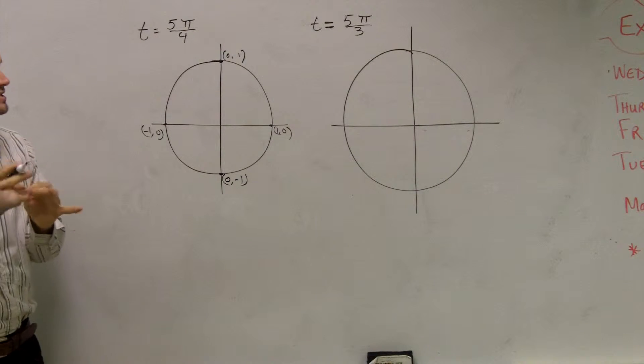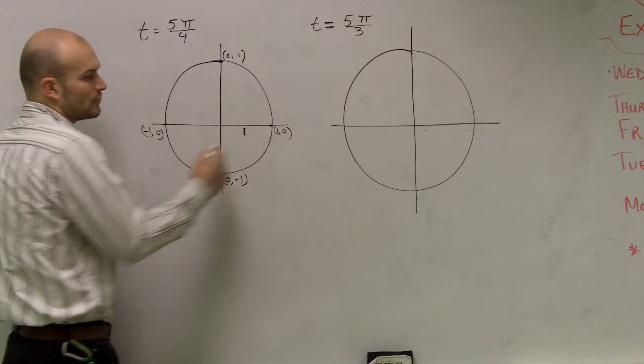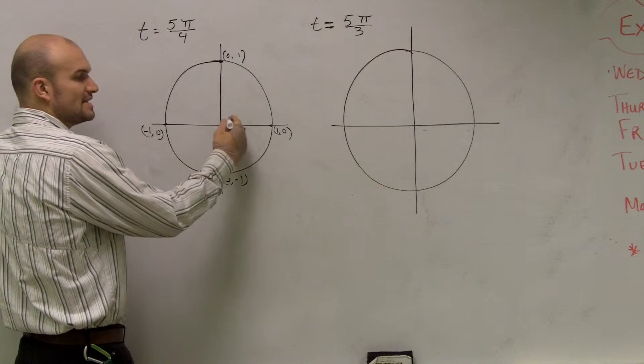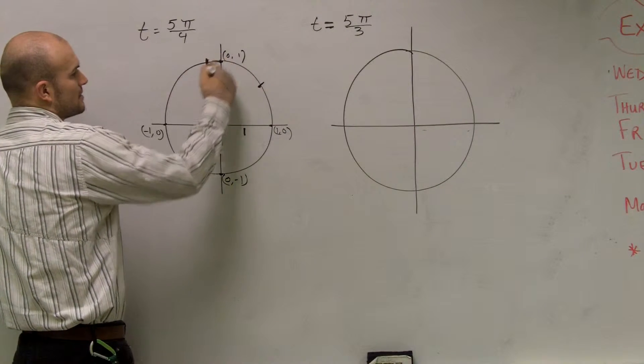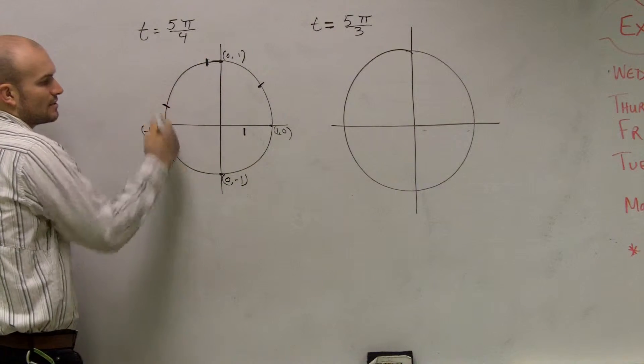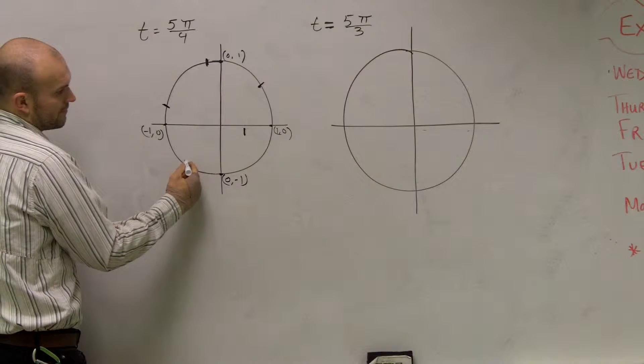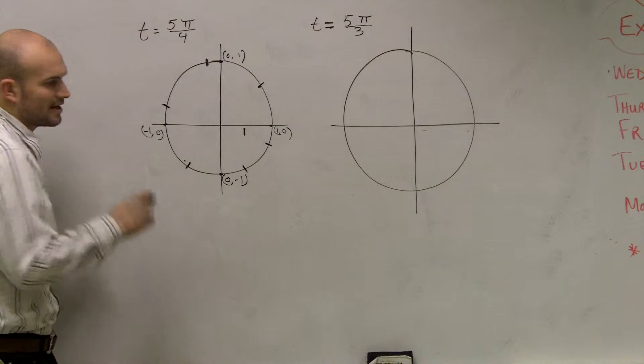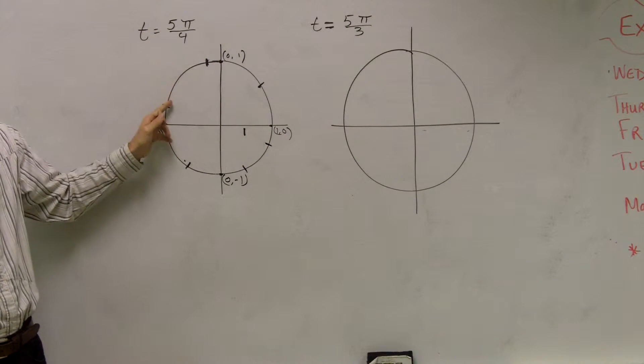A couple things I want to remind you guys of. First thing, we've already talked about radians, right? The radius of my unit circle is 1. And therefore, when we talk about a radian, that's the distance of our radius. And what we said is we could wrap it around. We could wrap our radians around, around the whole circle.